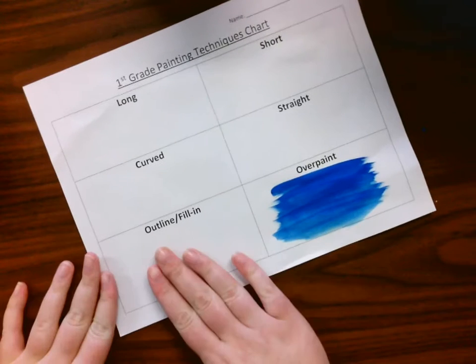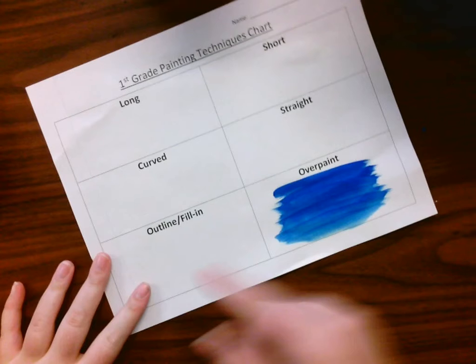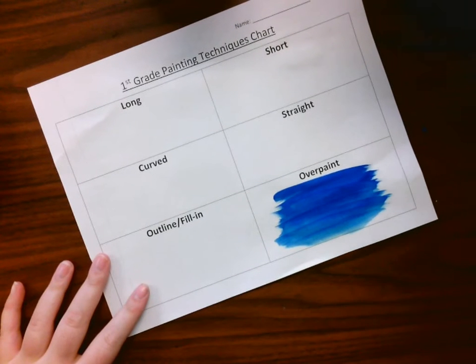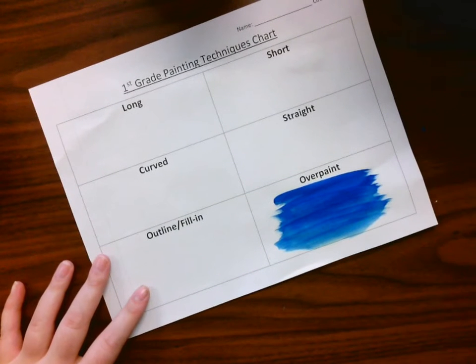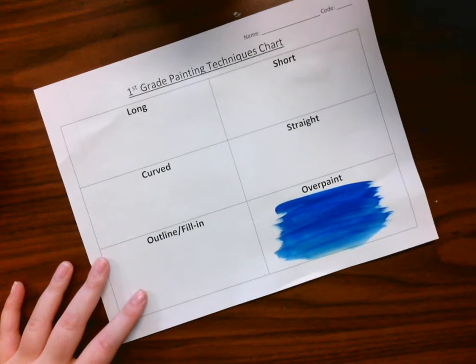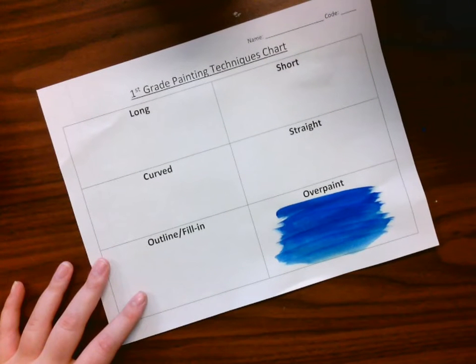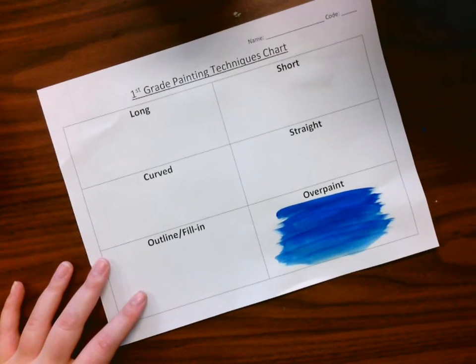The next thing that we're going to do, because this is going to take a while to dry, is we're going to work on the outline and fill in. The outline and fill in is how we're going to wind up painting our entire painting. We're not going to use any pencils on it, we're just going to use paint.